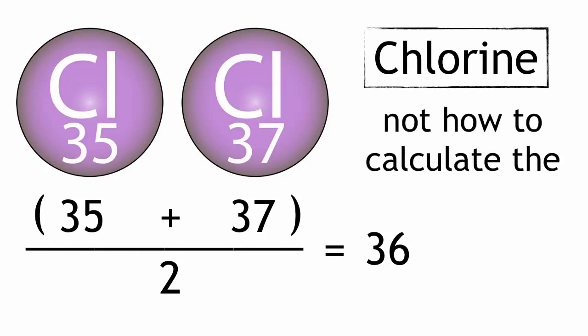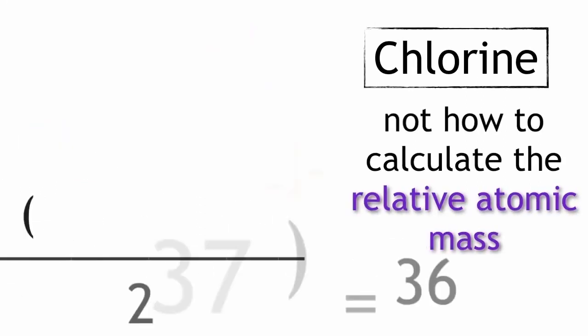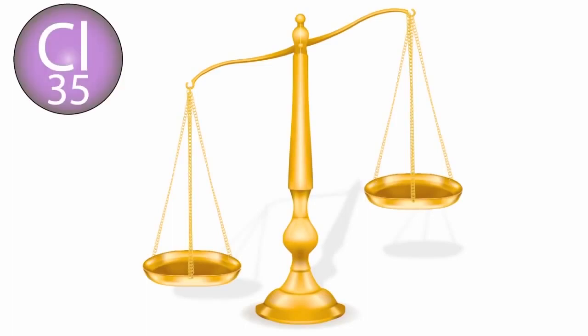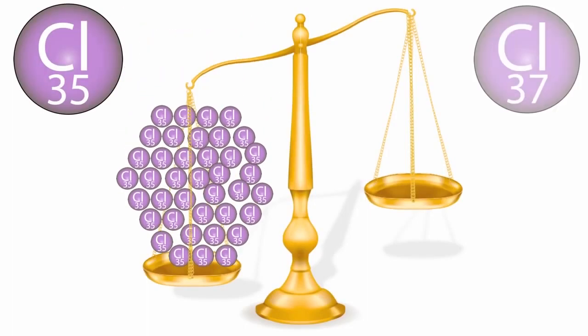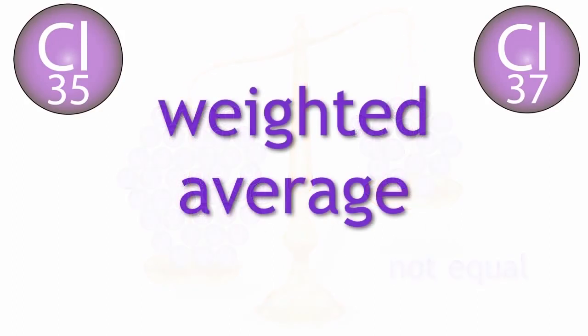But this is not how you calculate the relative atomic mass. We need to remember that we are talking about number of atoms. There are a certain number of chlorine atoms with a mass of 35, and a certain number of chlorine atoms with a mass of 37. However, within a sample, the levels of each isotope are not equal. So we take this into account when we are calculating the relative atomic mass, so that we are calculating a weighted average.